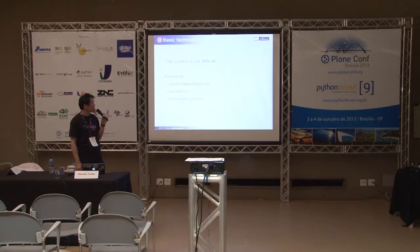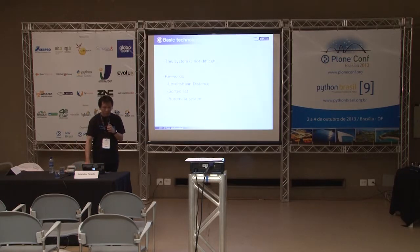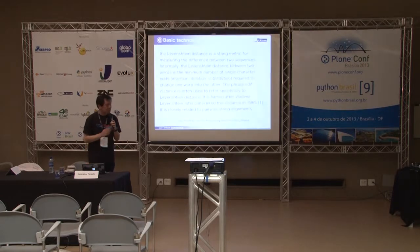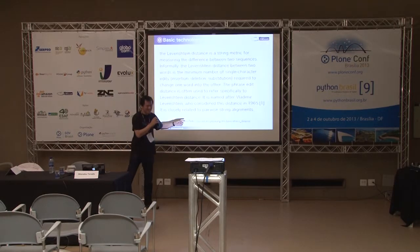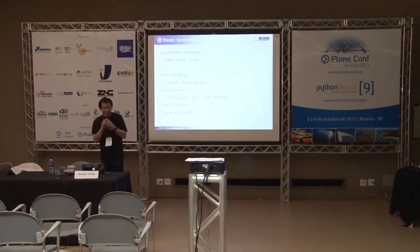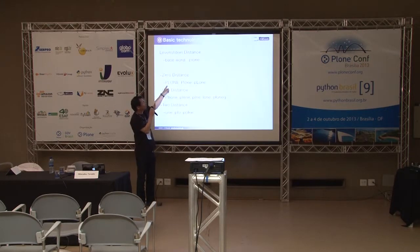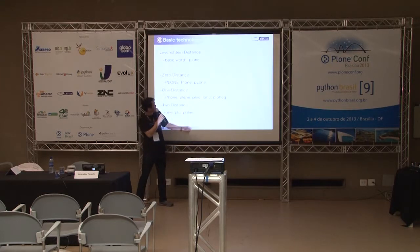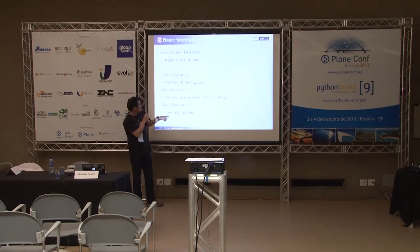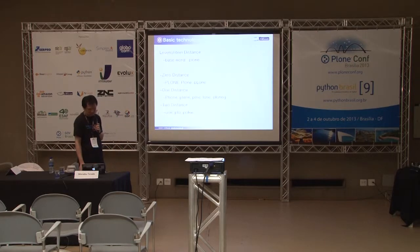I want to build an original system. The basic technologies are not difficult. The three key words are: Levenshtein distance, sorted list, and automata system. Levenshtein distance is a string metric from Wikipedia. For example, with base word 'Plone': zero distance is 'Plone' (or uppercase), one distance is 'phone', and two distance is 'PLO' — that is Levenshtein distance.